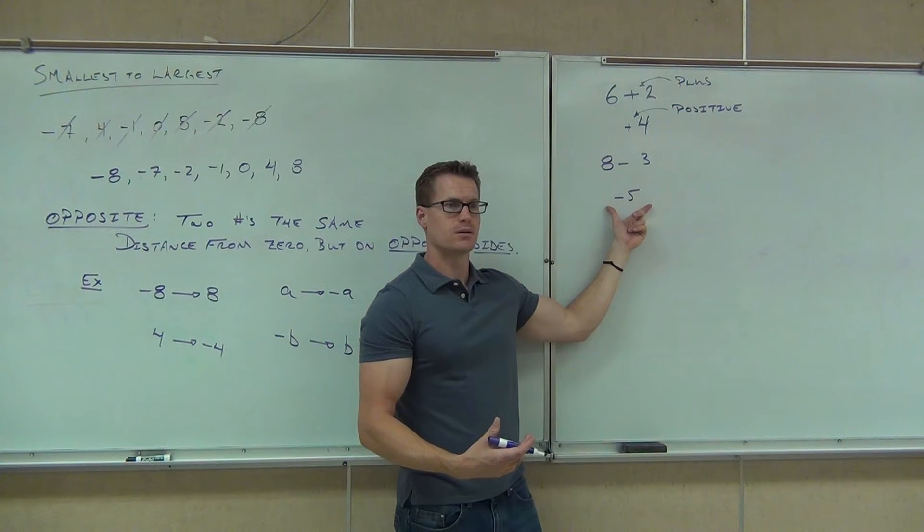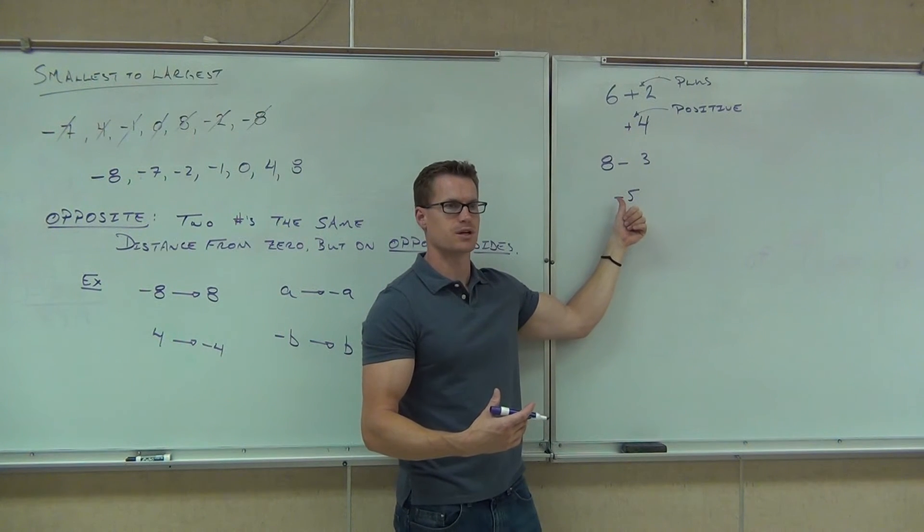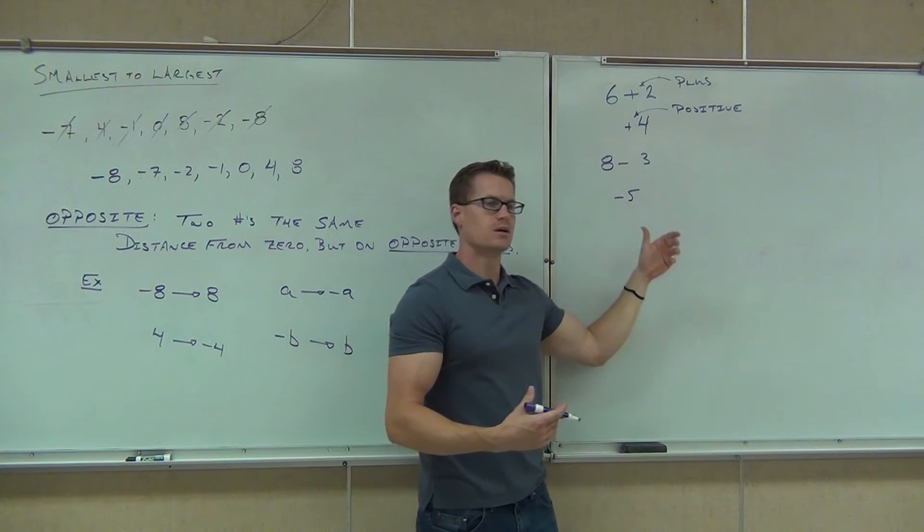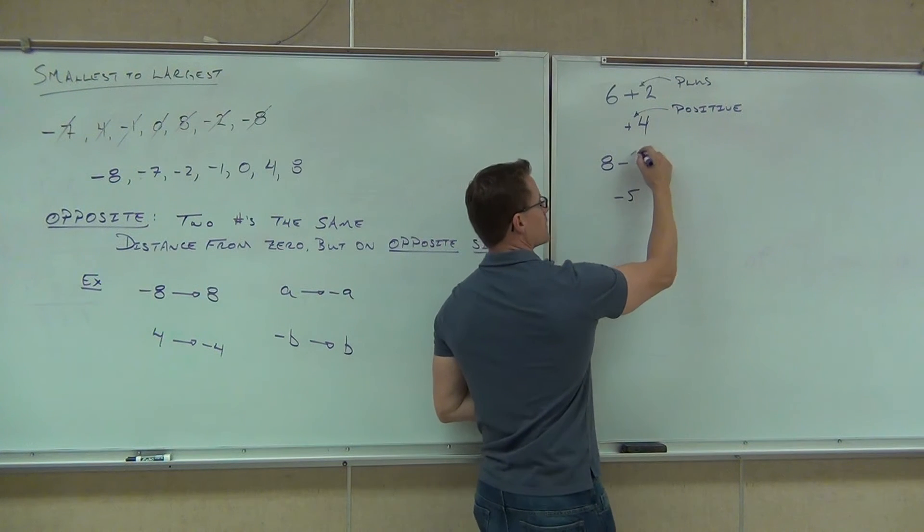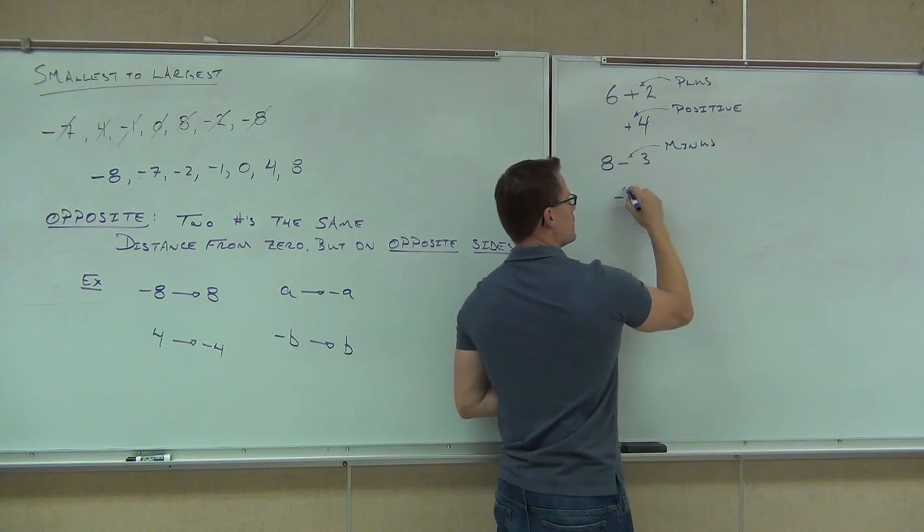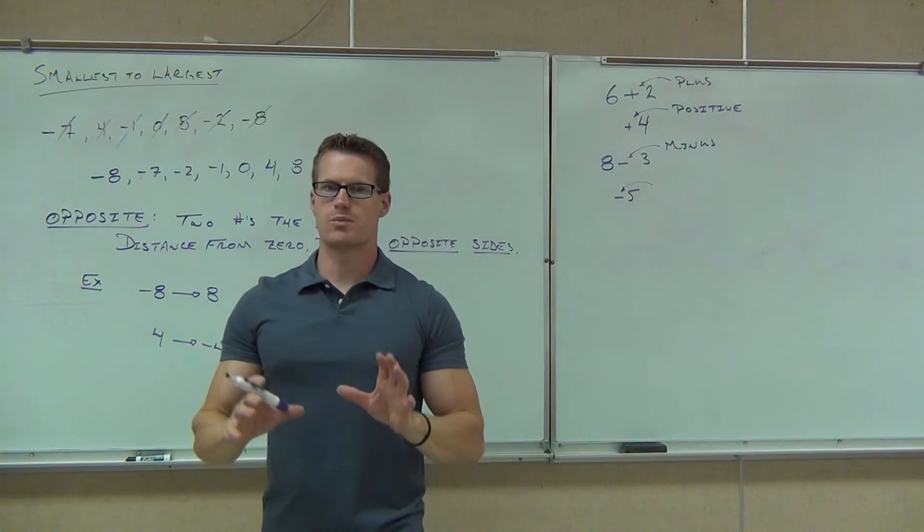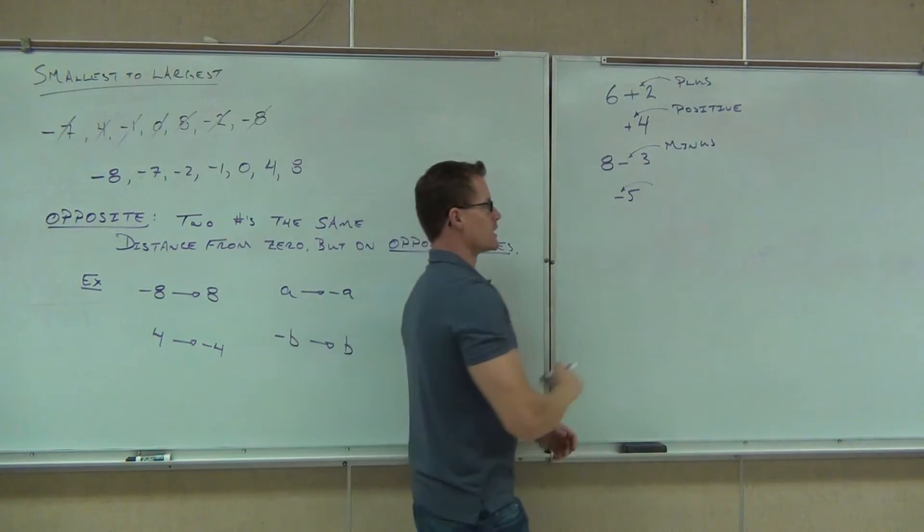Just use appropriate things. If we're talking about a subtraction problem, we use the word minus for sure. But if we have no number in front and that's implied, that's a negative five. The sign goes with the number. If I have a number out front I'm subtracting, we're going to say minus. If I don't have a subtraction problem, I'm just giving you whether this number is positive or negative, we're going to say negative.